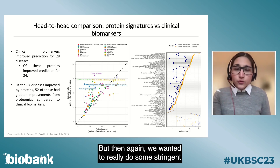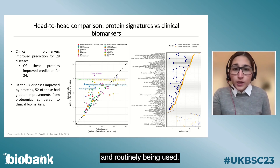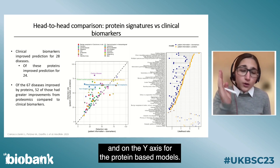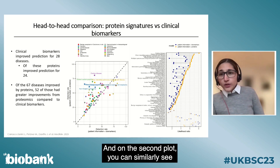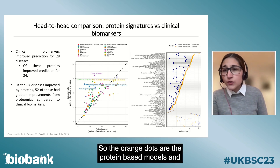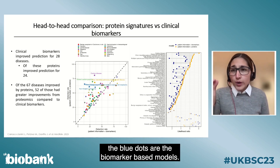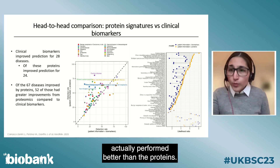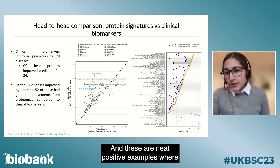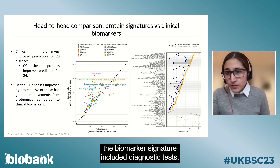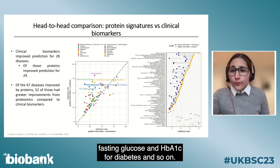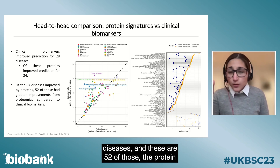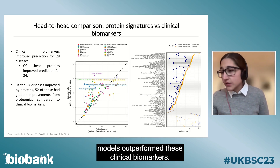We also made stringent comparisons with blood tests currently available and routinely used. The first plot shows detection rates for biomarker-based versus protein-based models; the second shows likelihood ratios, with orange dots for protein-based models and blue dots for biomarker-based models. For some diseases the biomarkers performed better — these are cases where the biomarker signature included near-diagnostic tests, such as uric acid for gout or fasting glucose and HbA1c for diabetes. However, for the majority — 52 diseases — the protein models outperformed these clinical biomarkers.